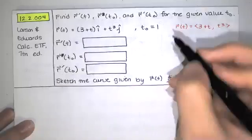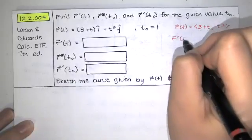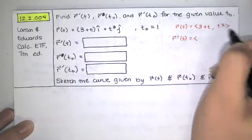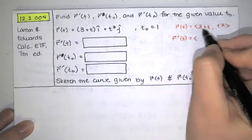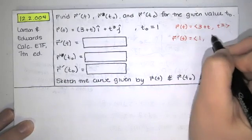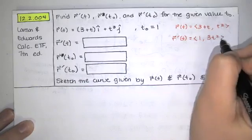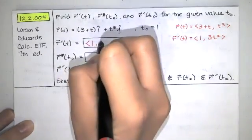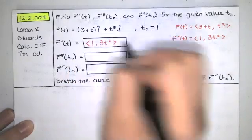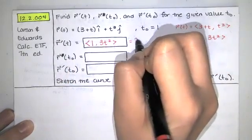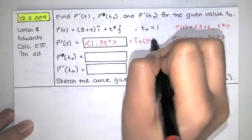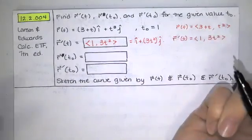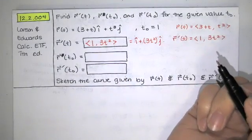So we're asked to find r prime of t. All we have to do is take the derivative of each component. The derivative of the first component is 1. The derivative of the second component is 3t squared. So you could type in this component form for r prime of t, or if you prefer, you could type in i hat plus 3t squared times j hat. WebAssign should accept both of those answers because they're both correct.